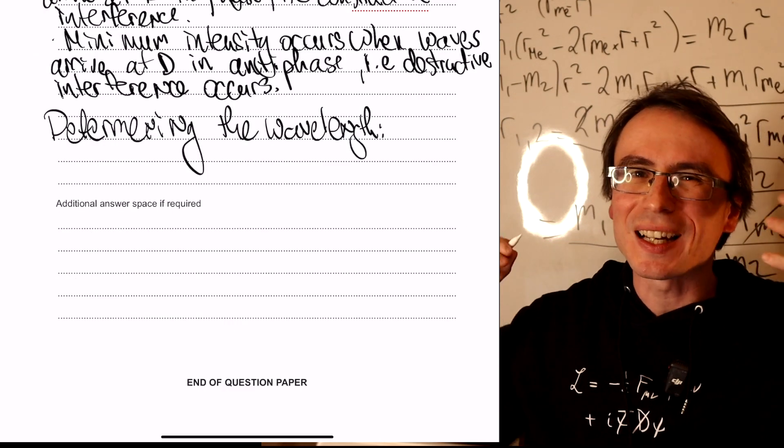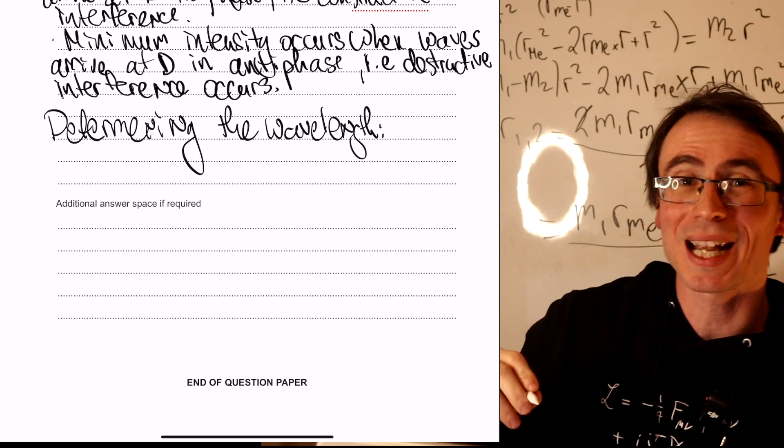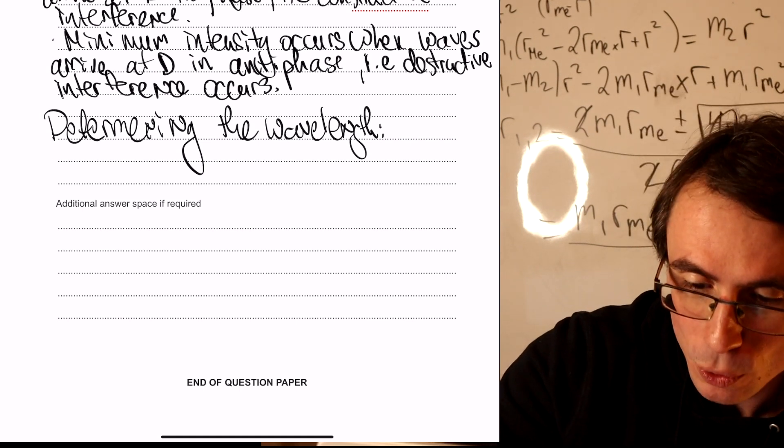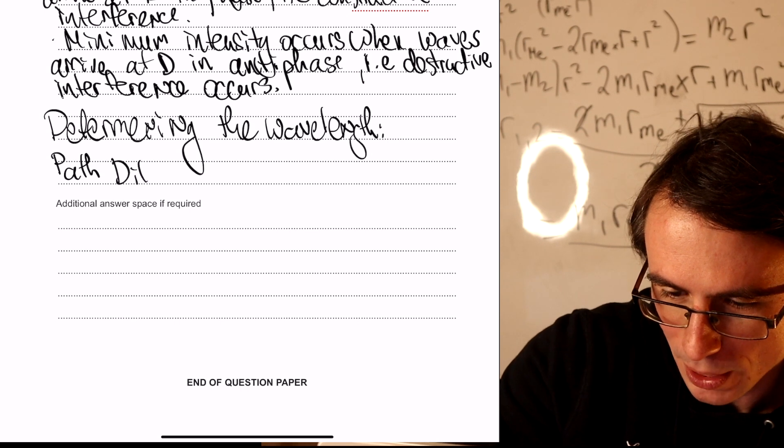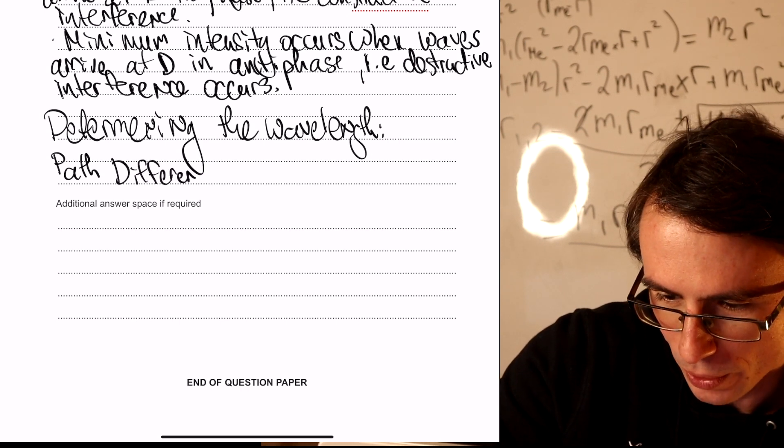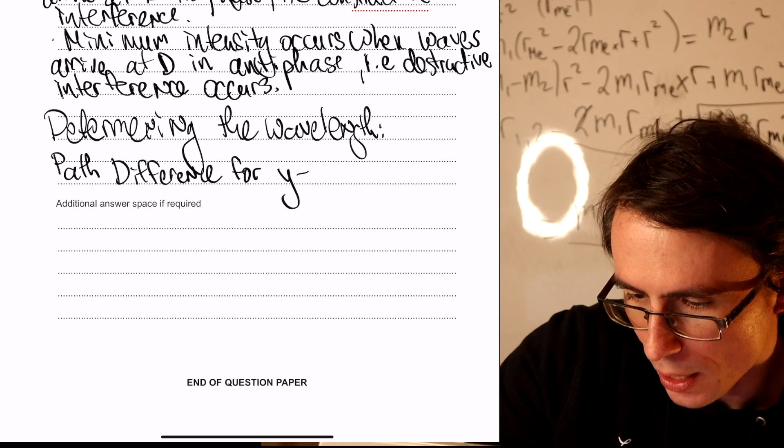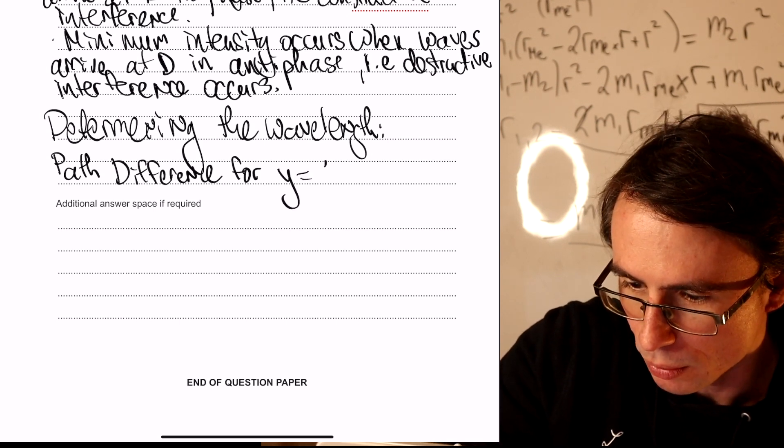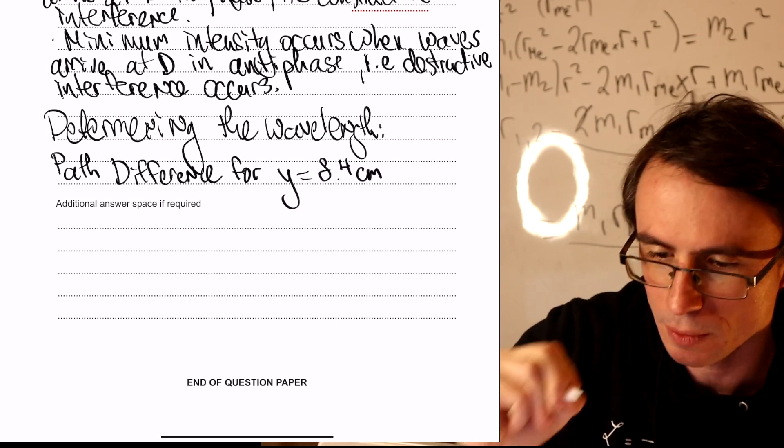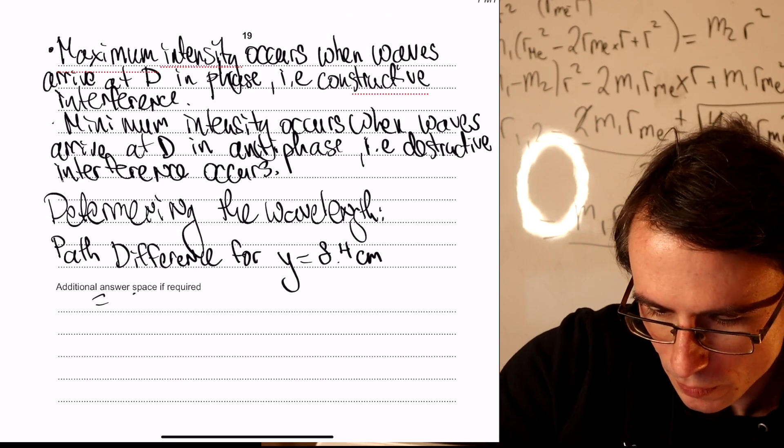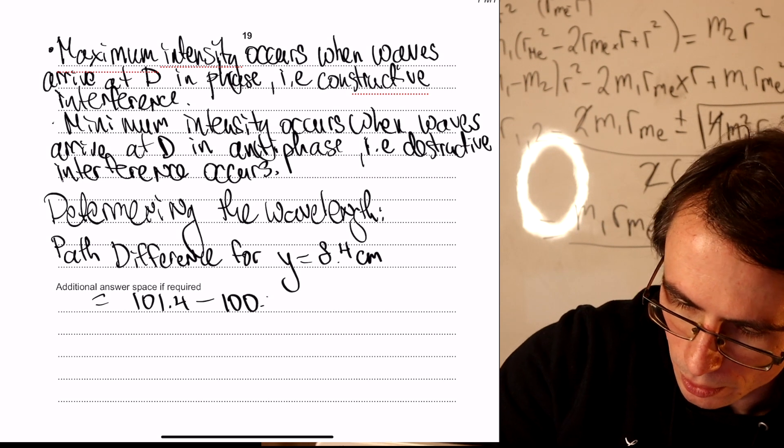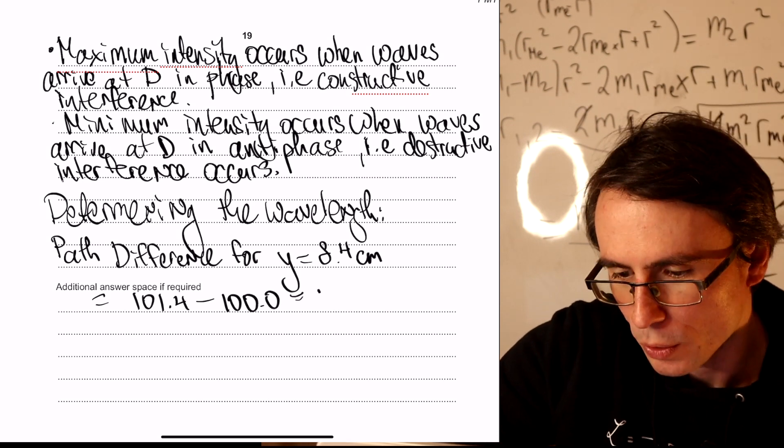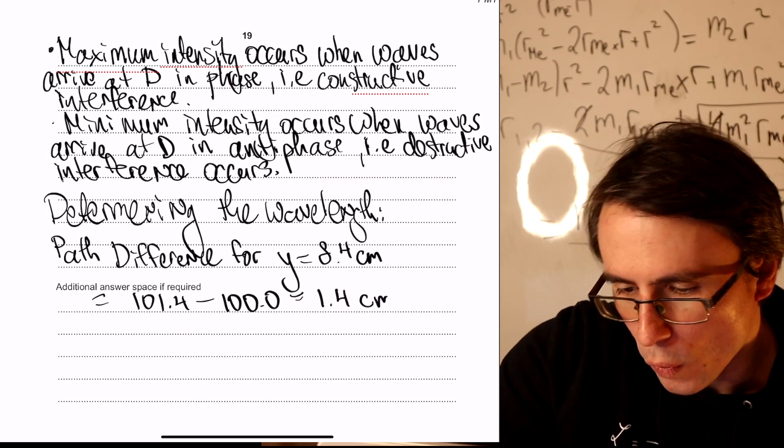And now we can directly calculate the path difference. The trick with these is to provide a lot of detail on exactly what we're calculating. So I'm going to note down that what we're doing is we're finding the path difference for y is equal to 8.4 centimeters. Well, the path difference in this case is 101.4, take away 100, which is just going to be 1.4 centimeters.